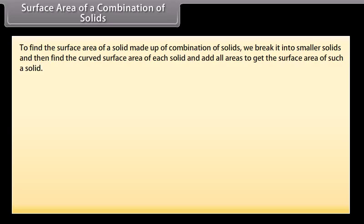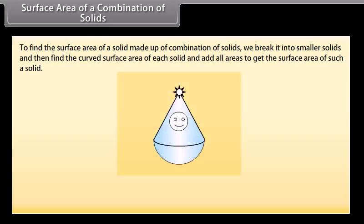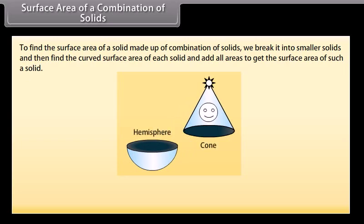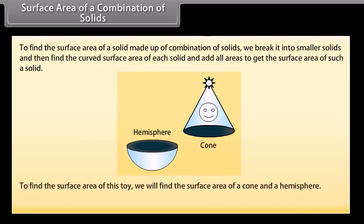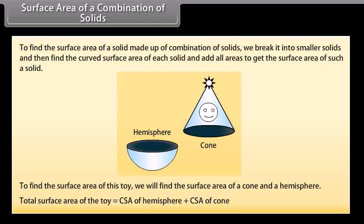To find the surface area of a solid made up of a combination of solids, we break it into smaller solids and then find the curved surface area of each solid and add all areas to get the surface area of such a solid. For example, look at this toy. This toy is a combination of a cone and a hemisphere. The total surface area of the toy equals the curved surface area of the hemisphere plus the curved surface area of the cone. Let's solve some examples.